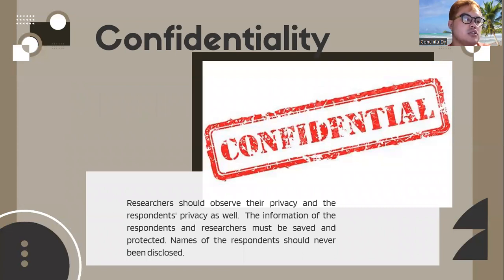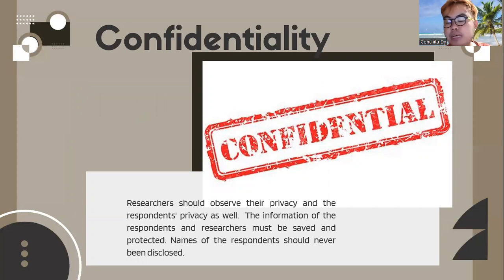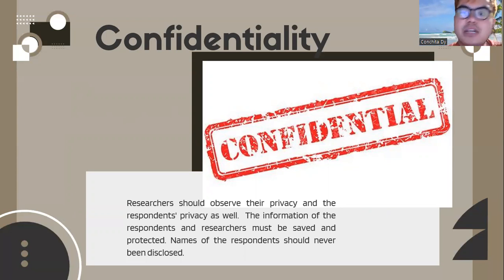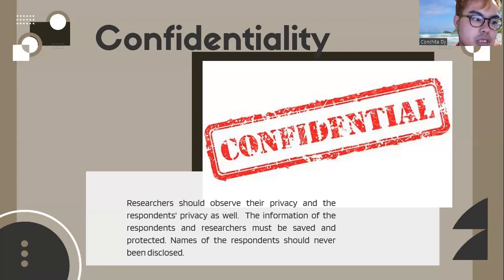When we say confidentiality, researchers should observe their own privacy and the respondents' privacy as well. This means that information — especially names and age — must not be disclosed. You cannot reveal names, age, or other personal information in the research findings or other parts of the research paper. Only keywords or roles should be used. For example, if the respondent's name is Erica, what should be written is 'math teacher.' Keep in mind that the information must be well protected and safe.